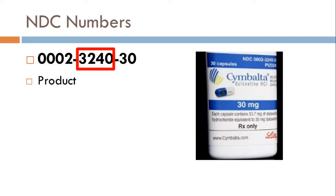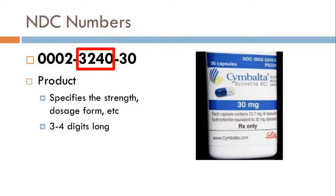The second portion is the product. Lilly, as the manufacturer, makes several different products, so it'll always start with 0002 for Lilly. The middle section is a unique identifier — for instance, Cymbalta 30mg is 3240, but Cymbalta 60mg will have a completely different middle section. That section is three to four digits long; if it's three digits, it may just have a zero as the first digit. Each different strength, dosage form, or formulation gets a different middle product number.